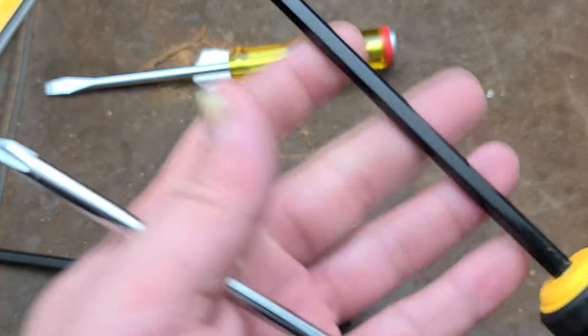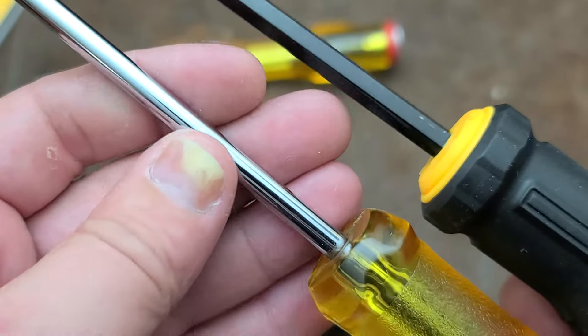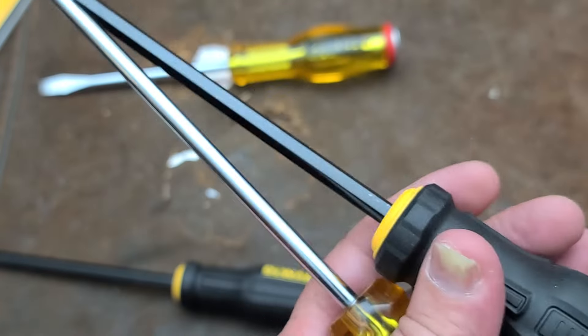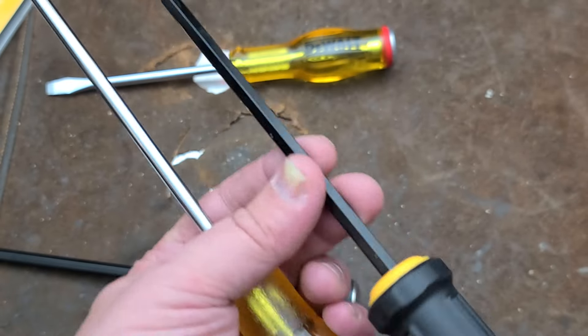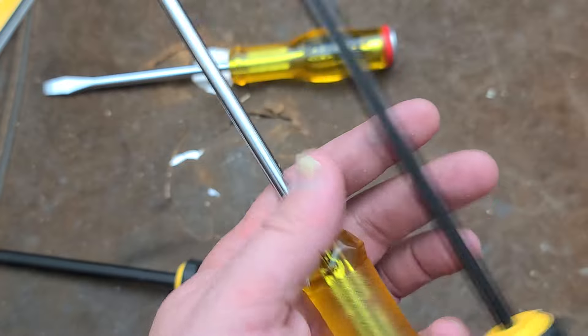They did upgrade the shanks, they are now hex, but they were round on the older ones. That way you can use pliers or an adjustable wrench to help give you some more torque.